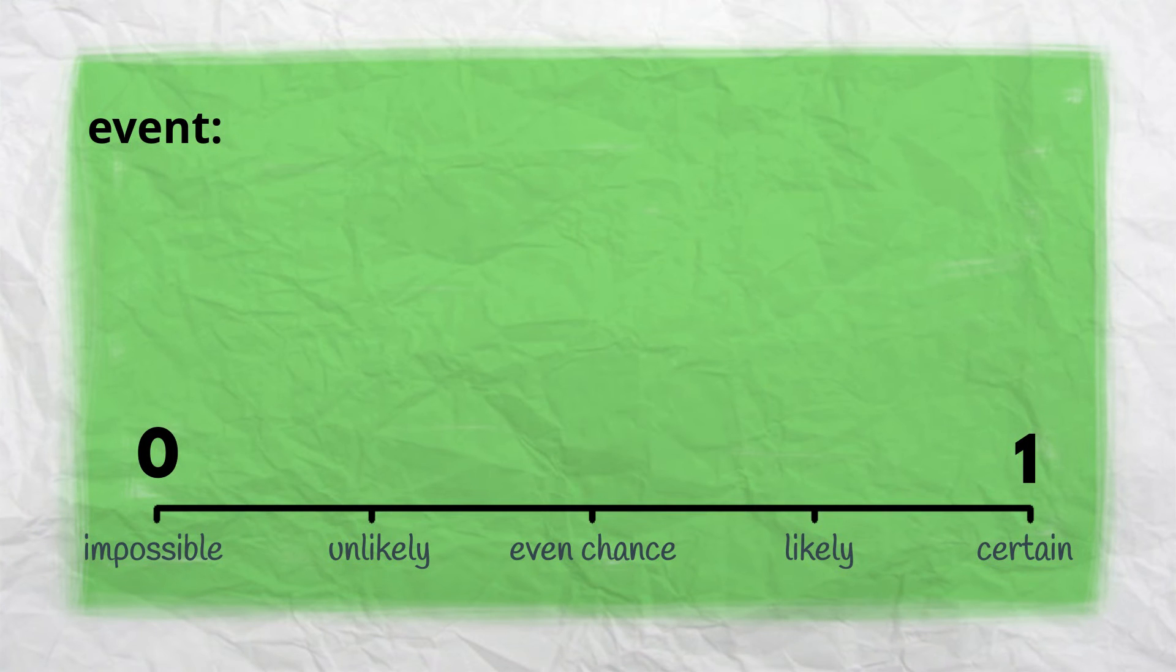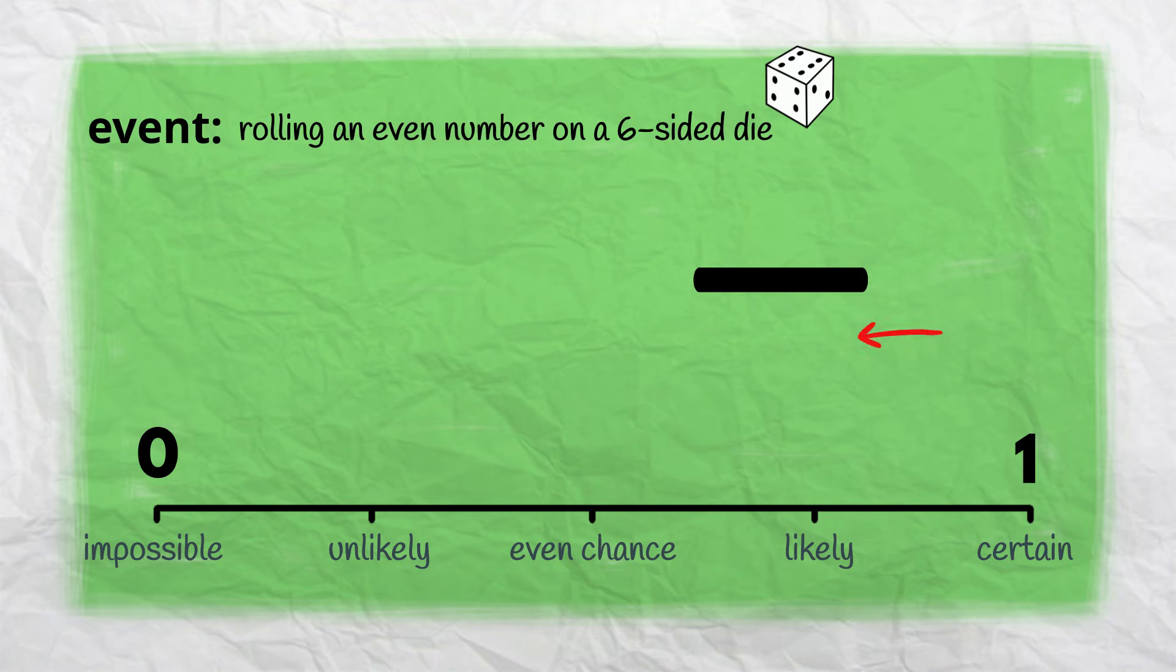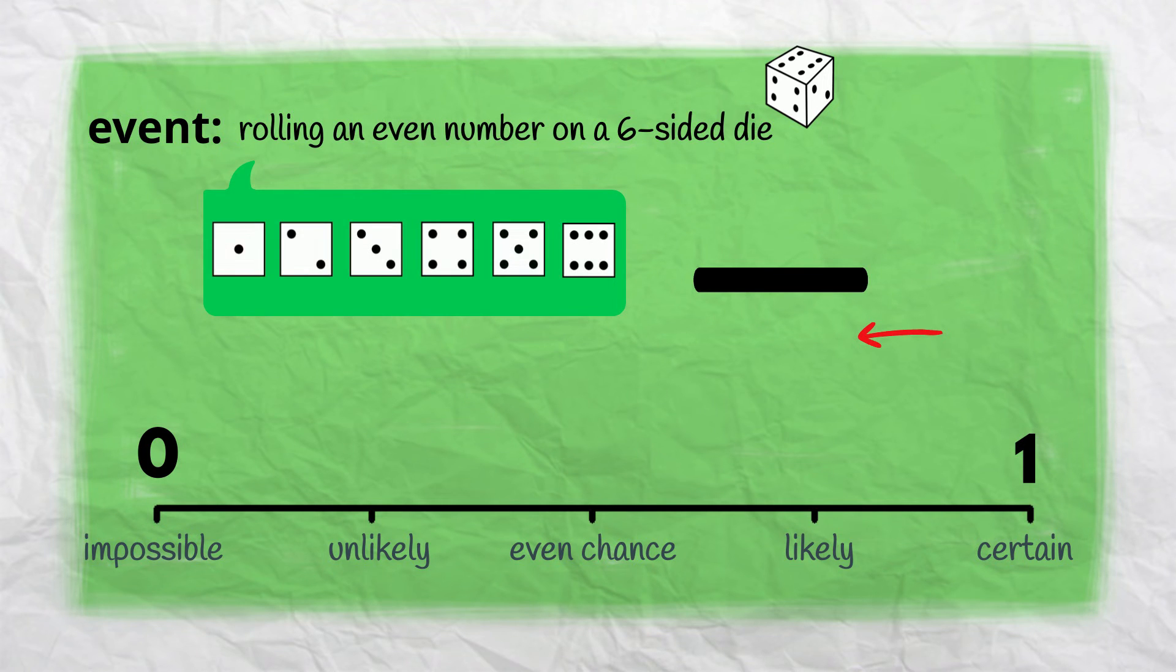Let's now calculate the chance of a new event, this time rolling an even number on a six-sided die. Let's start with the denominator. What are the total number of possible outcomes? Again, we could roll a 1, a 2, a 3, a 4, a 5, or a 6. There are six possible outcomes, so again our denominator is 6.